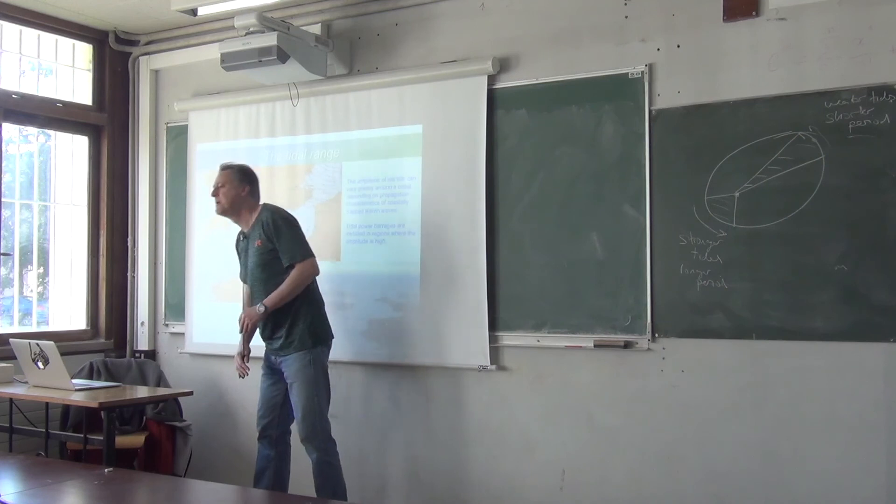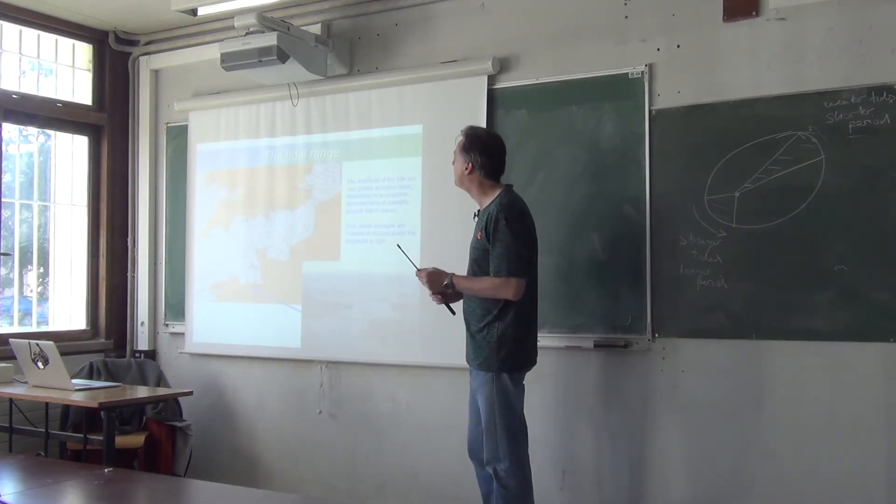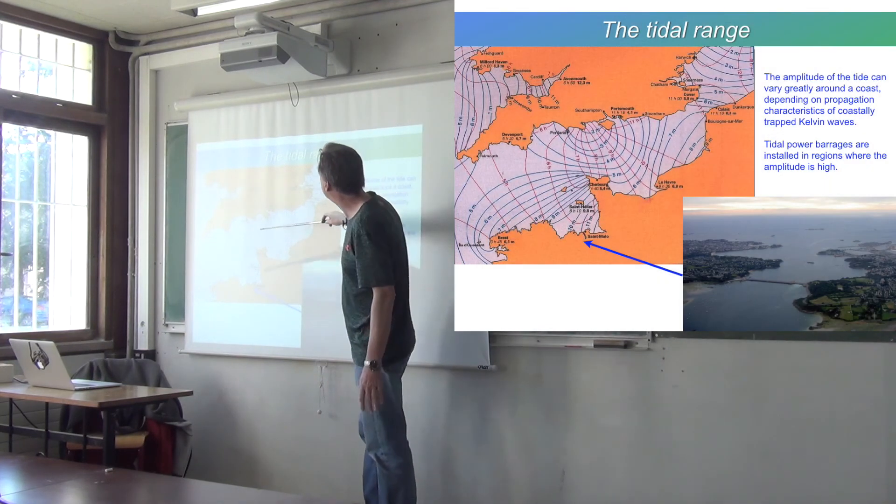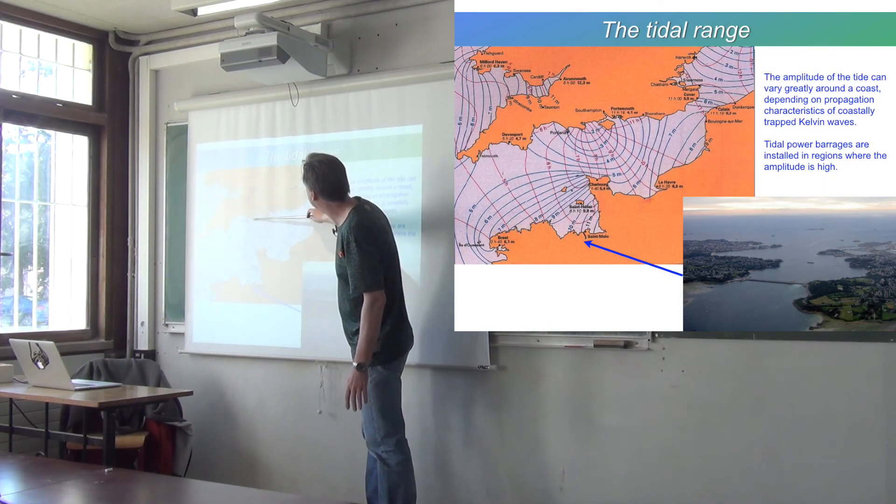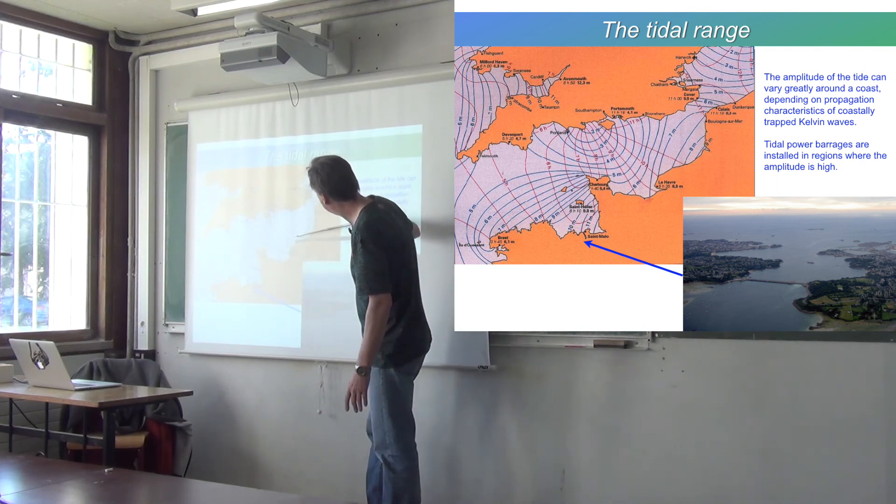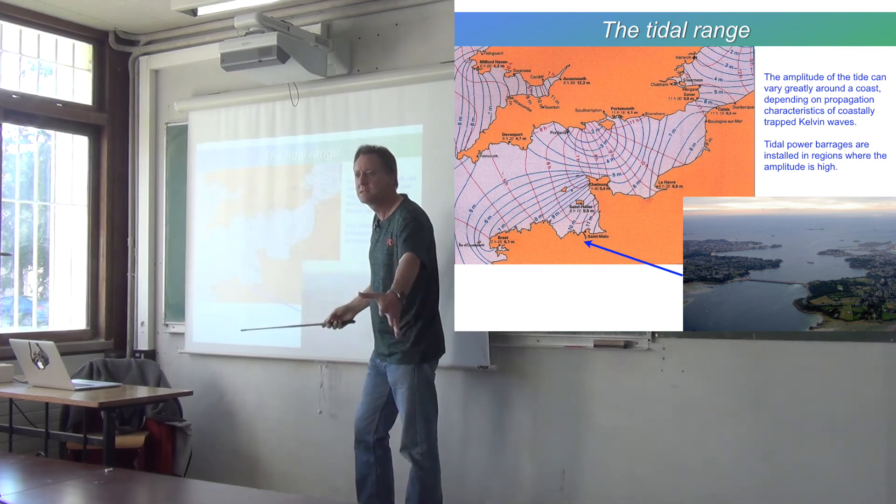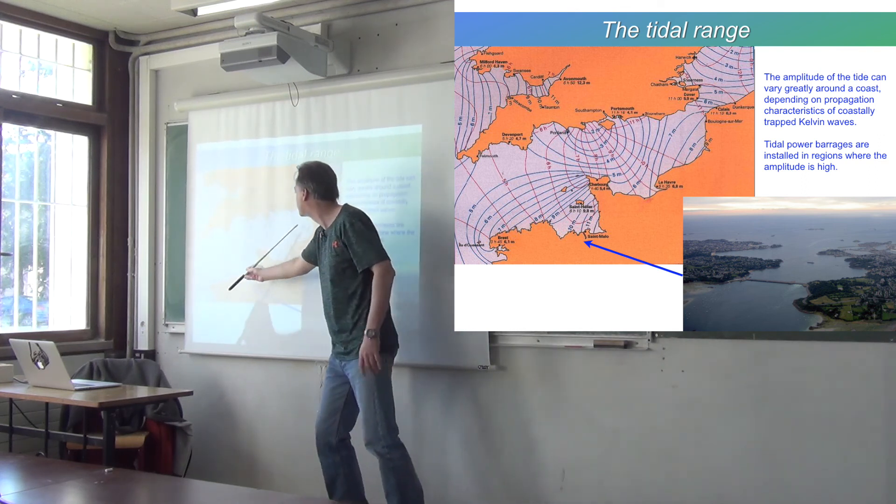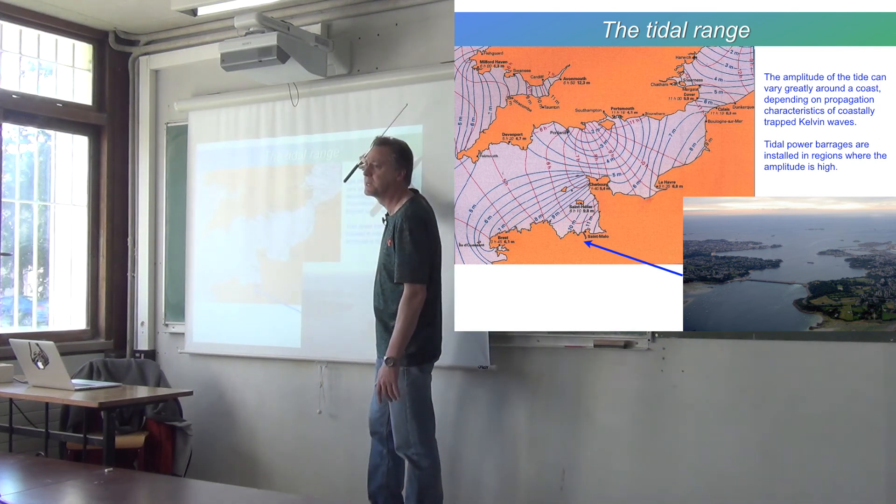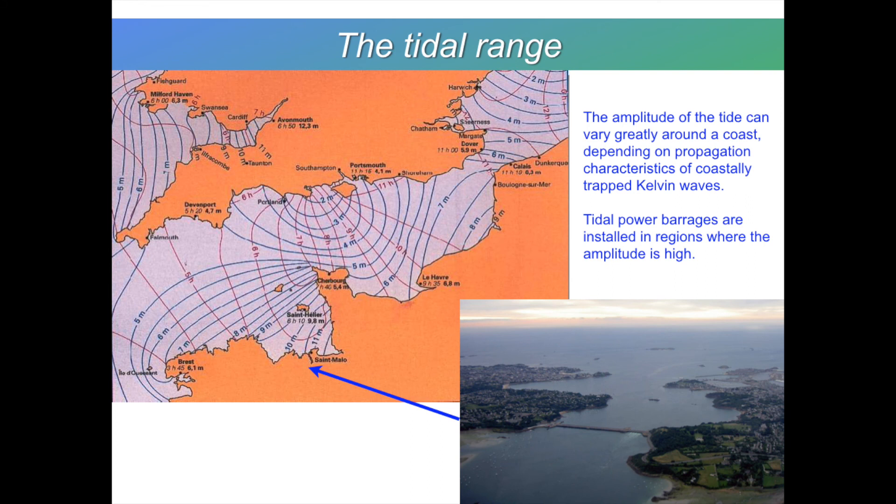And if you will go back to this picture that I showed you when I was talking about Kelvin waves. If you look at the tidal range, southern England, it's just a few meters. Northern France, it's up to 10 meters. So the tide is stronger in northern France than it is in southern England, because it's a Kelvin wave propagating with France to its right as it goes through the English Channel. And here's a picture of that power station in St. Malo, where they generate energy from the tidal daily variations.